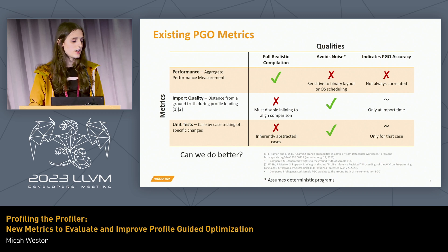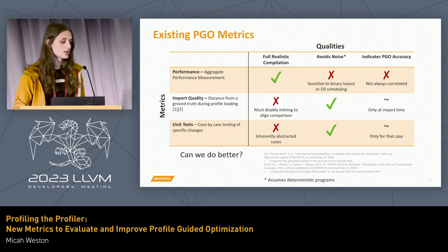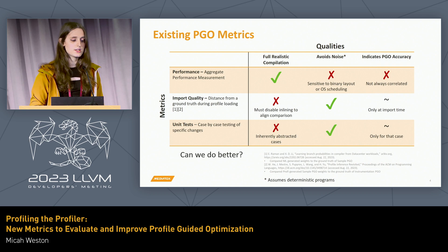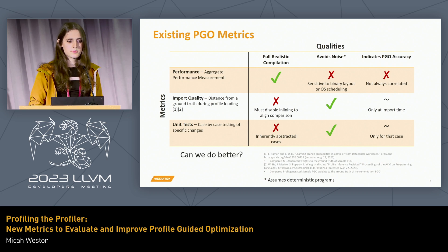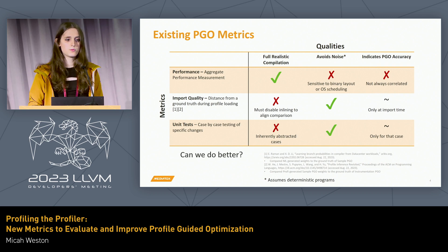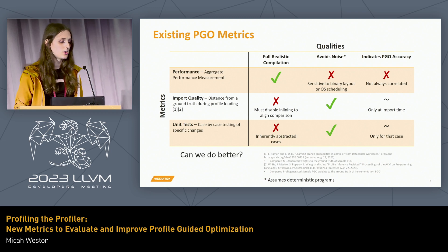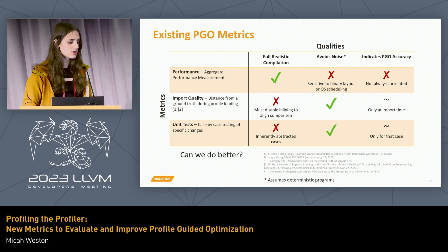Another possible metric is just unit tests. This does avoid noise. However, due to its very case-by-case nature, it's hard to find problems that you didn't know about in the first place or weren't already covered.